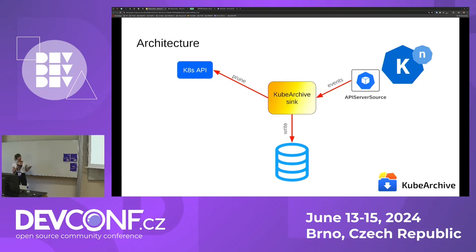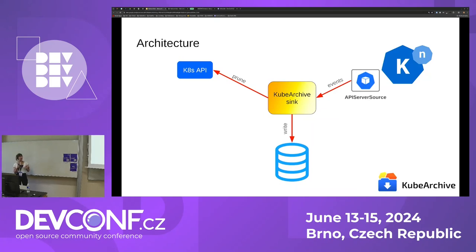This leads us to the first actual component of kubearchive: kubearchive sink. It's written in Go, as are the rest of the components of kubearchive, and it's responsible for receiving the events, processing them, writing them to the SQL database, and pruning the resource from etcd through the Kubernetes API afterwards.